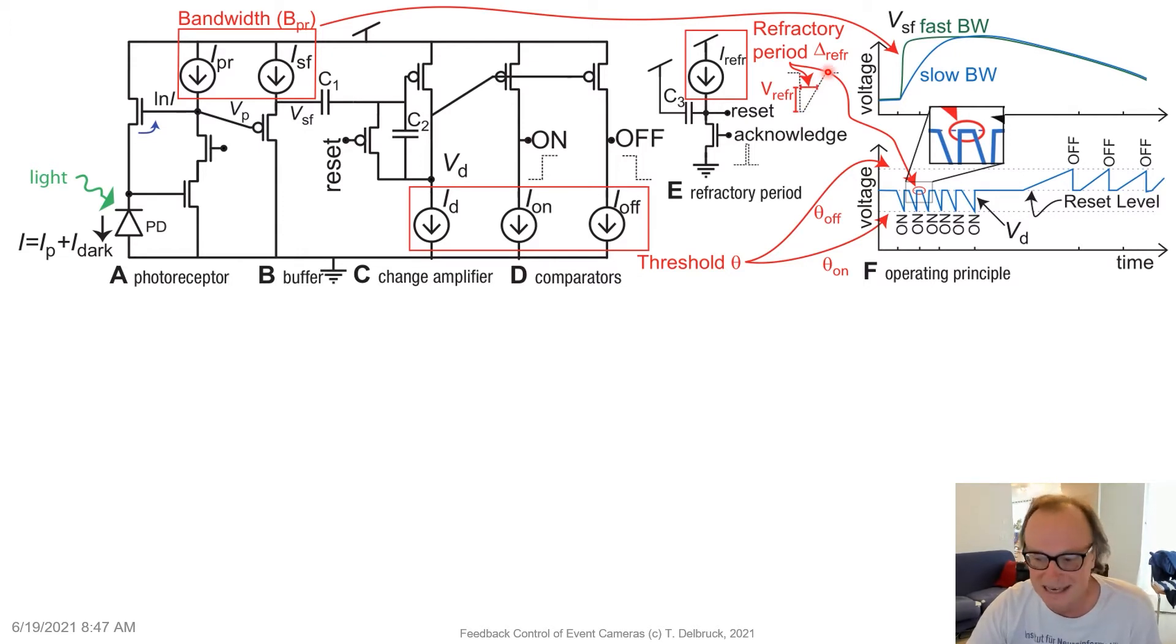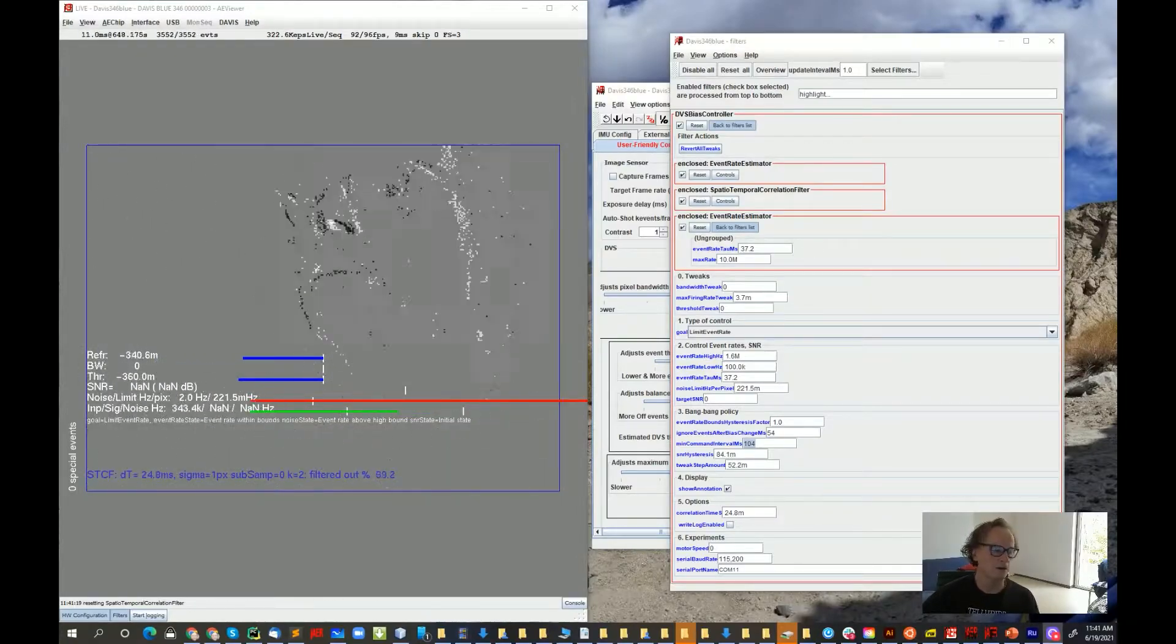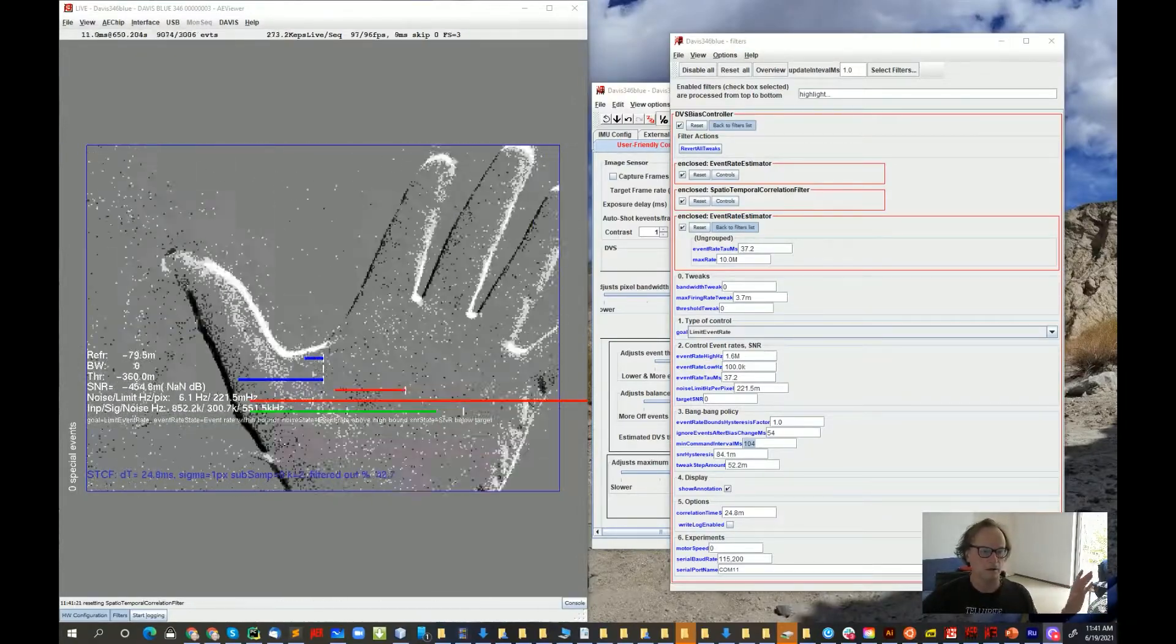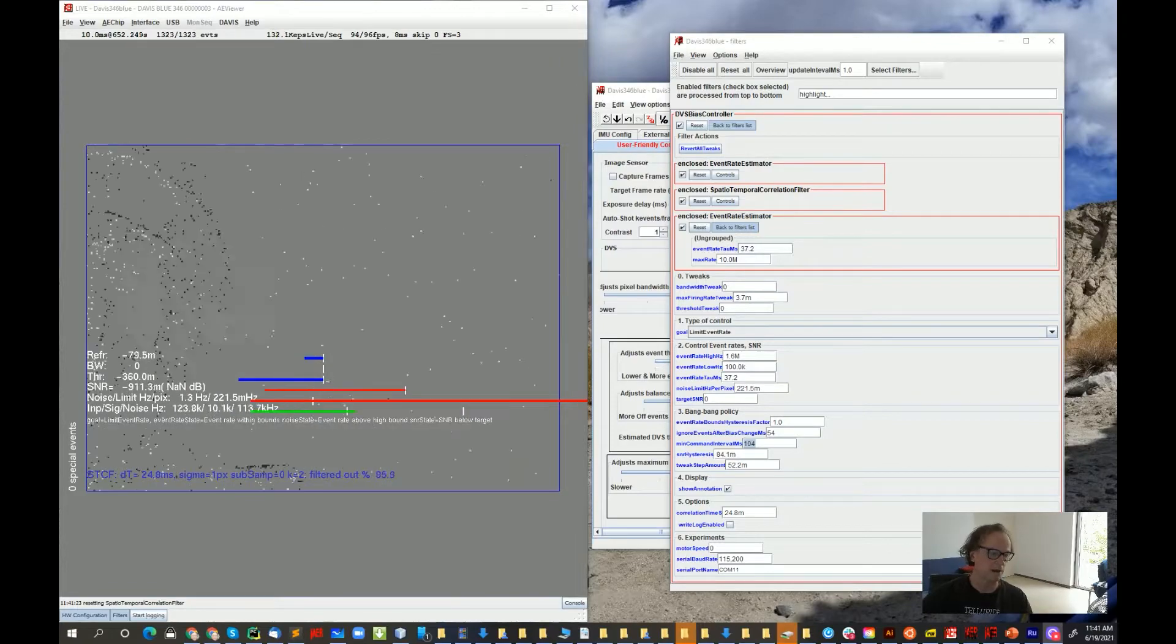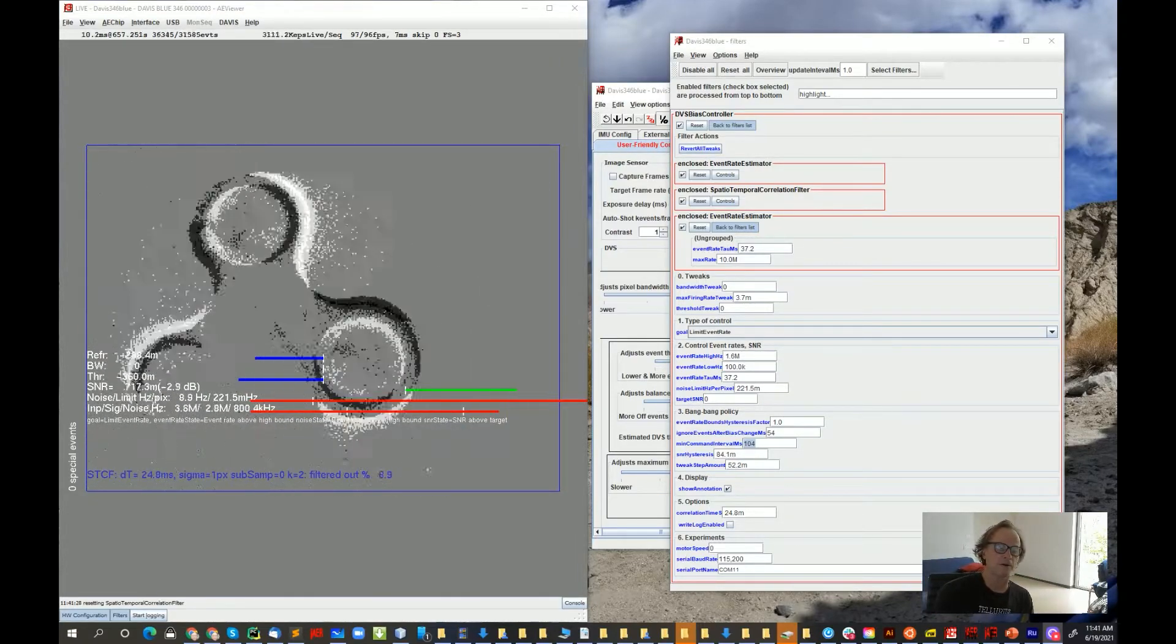I'm going to demonstrate this feedback control into the DVS pixel of refractory period using this Davis 346 mini camera exposed in JAER here. What you see here on the left is the JAER output, the DVS output. You can see my hand and you can also see this fidget I have here.